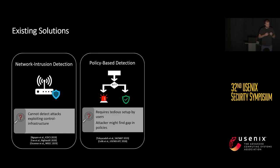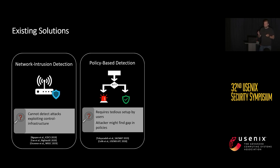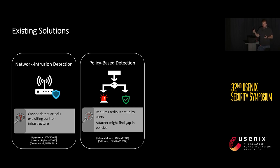The second category of approaches are policy-based systems. A user can set up a policy such as 'when I'm absent, the door must not open.' However, these policies heavily depend on user habits and need to differ between every different smart home. Therefore, the end user would have to set them up, which is not practical. And if an end user who is not skilled in security sets up some policies, it's very likely that a sophisticated attacker can find a gap in these policies.